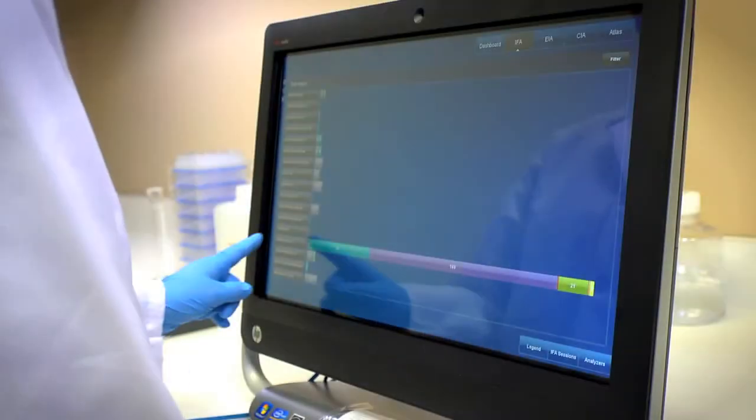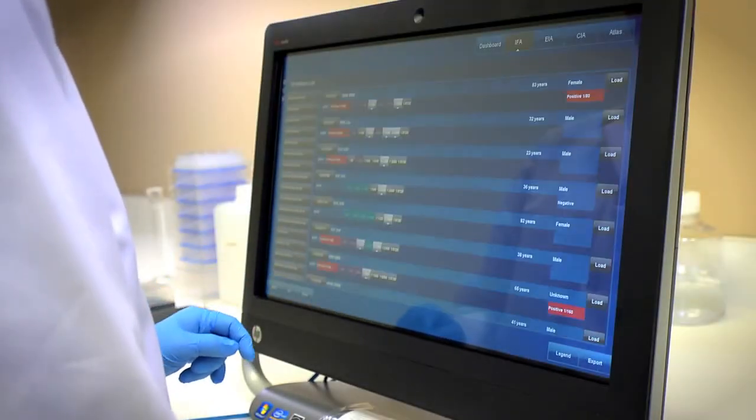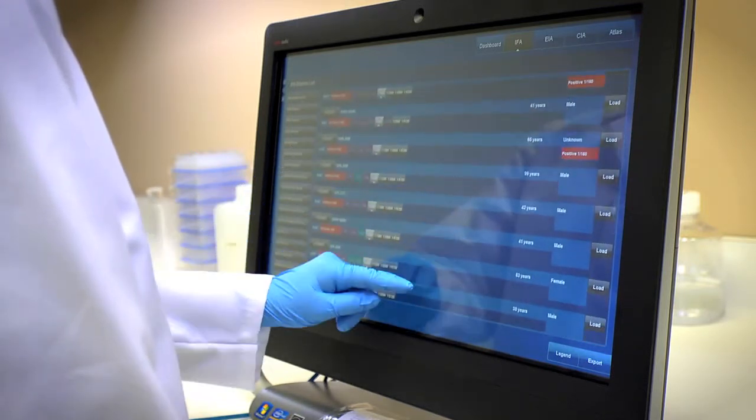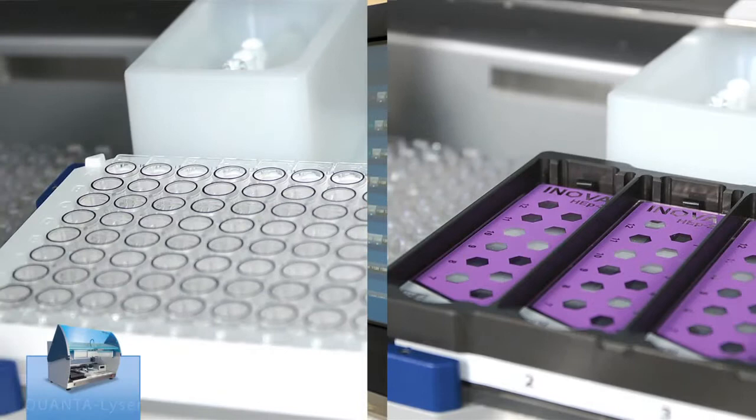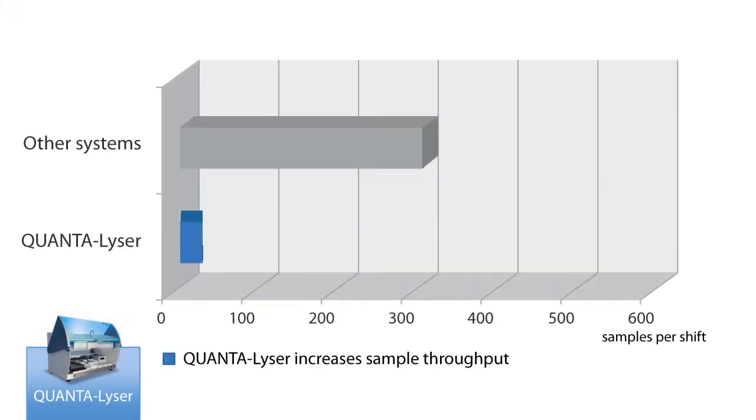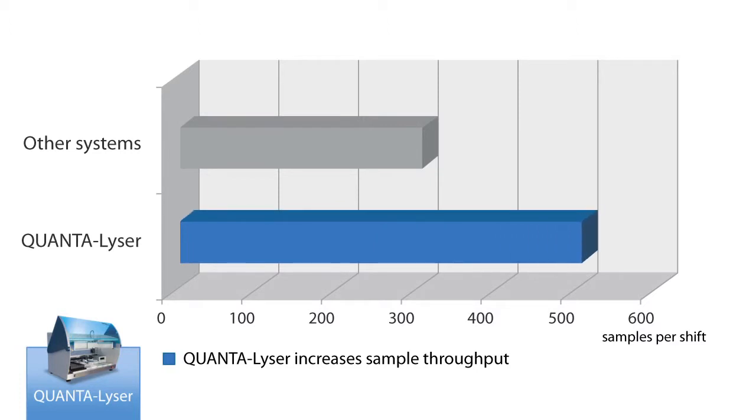With centralized data control, worklists can be easily generated to initiate sample testing. Automated processing performed by Quantilizer ensures sample integrity, maximizes throughput, and minimizes hands-on time.